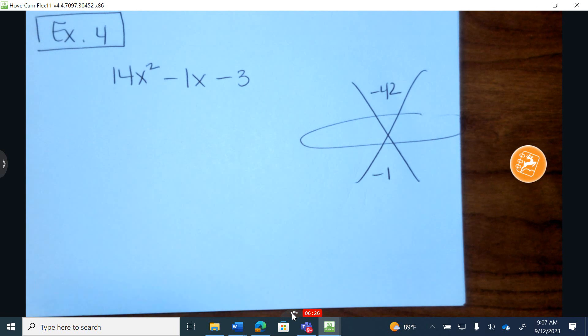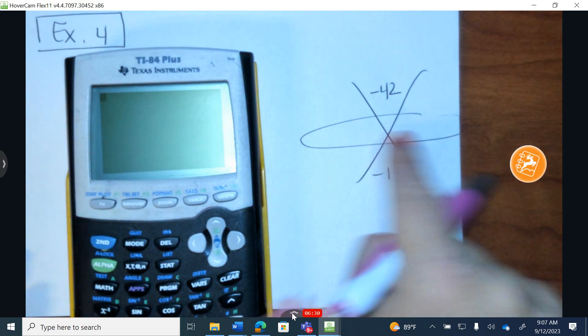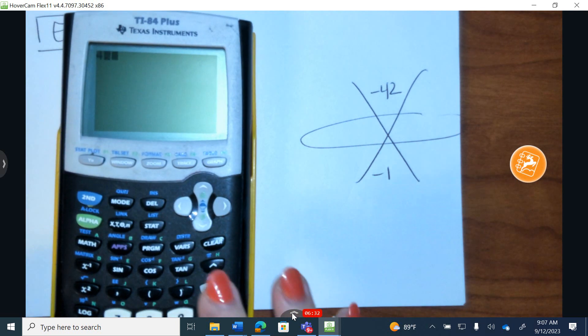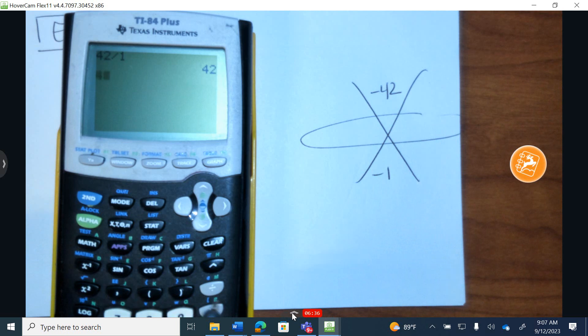So negative 42 and negative 1. And again, I feel like after helping several classes, the biggest part of confusion is how do you get these? So I start with 42. I divide it by 1. 1 and 42 does not give you a negative 1 when you combine. Divide it by 2. 2 and 21. Nope.